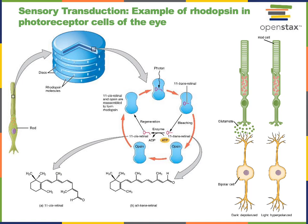This is an unusual transduction mechanism in that detecting the stimulus will lead to a decrease in the release of neurotransmitters. In the other examples we've studied, the stimulus caused depolarization and increased release of neurotransmitters, but the opposite case occurs in the visual signal transduction mechanism.